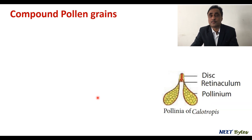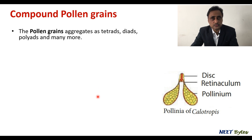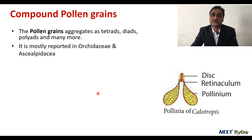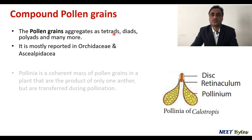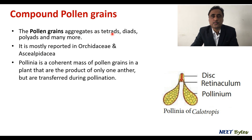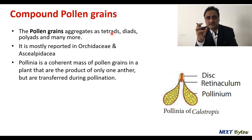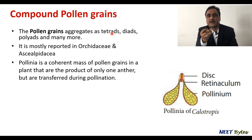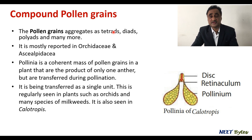There are a few angiosperm families with compound pollen grains, most importantly Orchidaceae and Asclepiadaceae. Pollen grains aggregate as tetrads, dyads, polyads, and more. This compound pollen grain is called pollinium, within which a large number of pollen grains aggregate together. The entire structure is removed by an insect as a group to effect cross-pollination — for example, the translator mechanism in Calotropis.